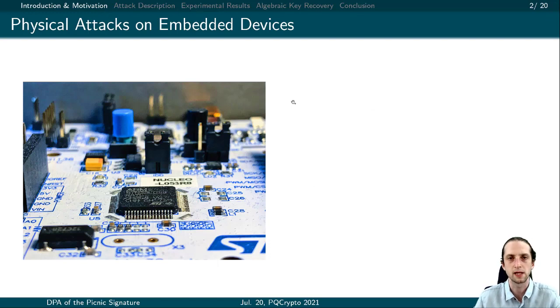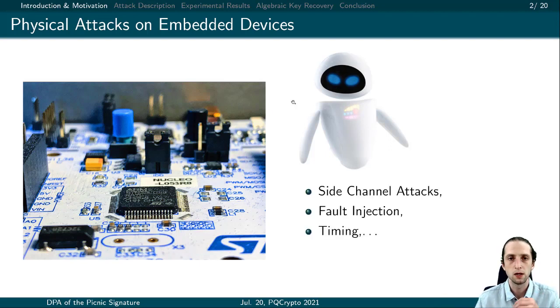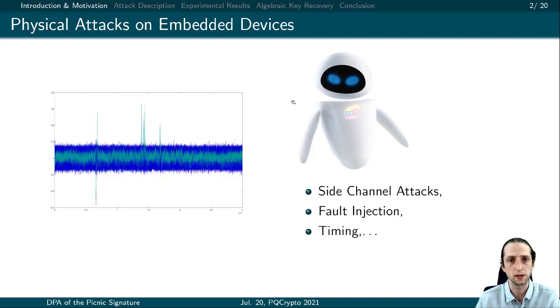It's a well-known fact that embedded devices that run cryptographic algorithms are vulnerable to physical attacks. Let's assume we have an adversary Eve - she can use information such as power, timing, or implement fault injection. In a very basic scenario, she can reveal the secret key using differential power analysis.